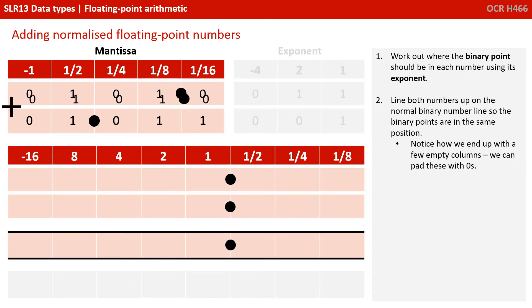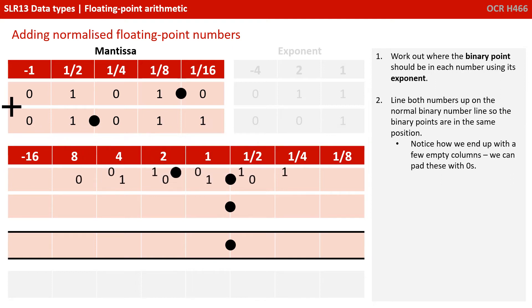Step two: line up both numbers on the normal binary number line so the binary points are in the same position. Notice how we end up with a few empty columns, which we simply pad with zeros.